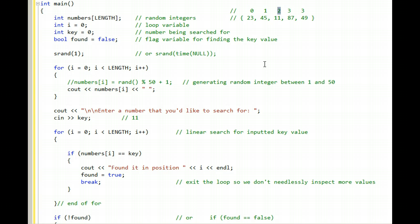i is now 2 by the way. And we check to see if numbers square brackets i is equal to key. At this point it is, 11 is equal to 11.